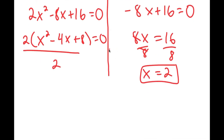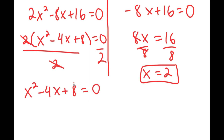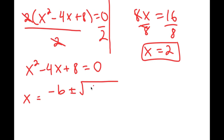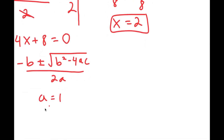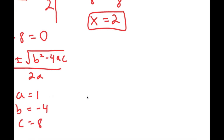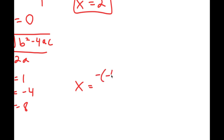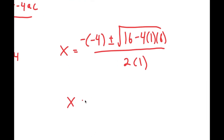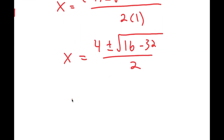Continuing, if I divide both sides by 2 I get x squared minus 4x plus 8 equals 0, and using the quadratic formula — negative b plus or minus the square root of b squared minus 4ac, all over 2a — with a equals 1, b equals negative 4, and c equals 8, I have x equals negative of negative 4, plus or minus the square root of negative 4 squared (which is 16) minus 4 times 1 times 8, all over 2 times 1. This gives 4 plus or minus the square root of 16 minus 32 over 2, which is 4 plus or minus the square root of negative 16 over 2.